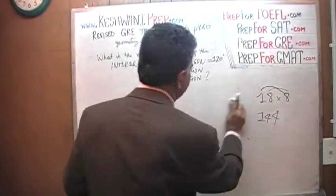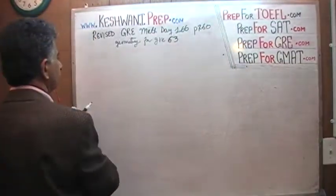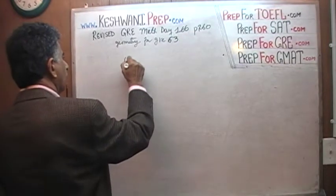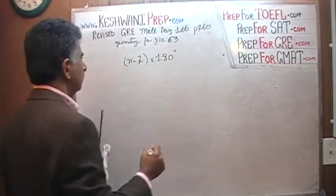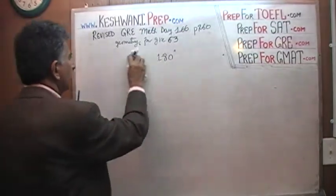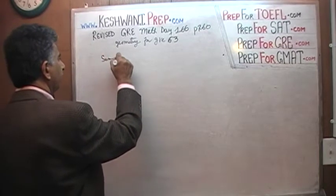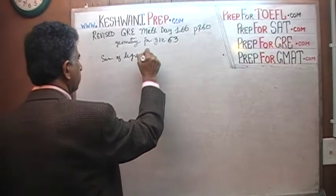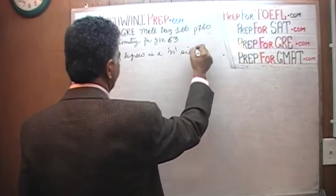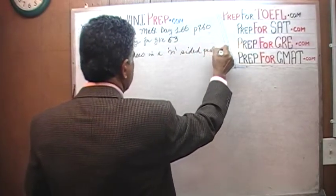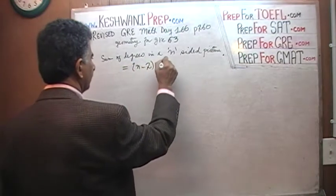So to summarize: the sum of degrees in an n-sided polygon equals (n minus 2) times 180.